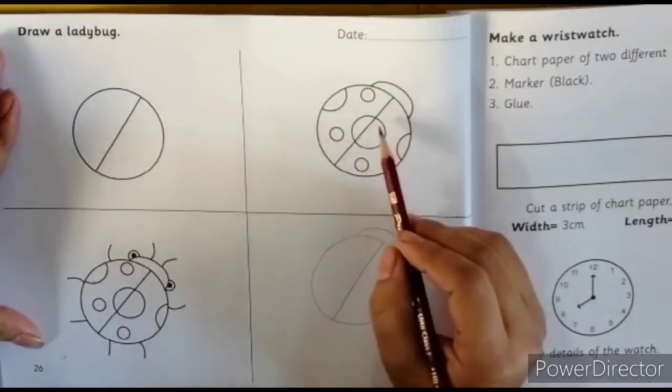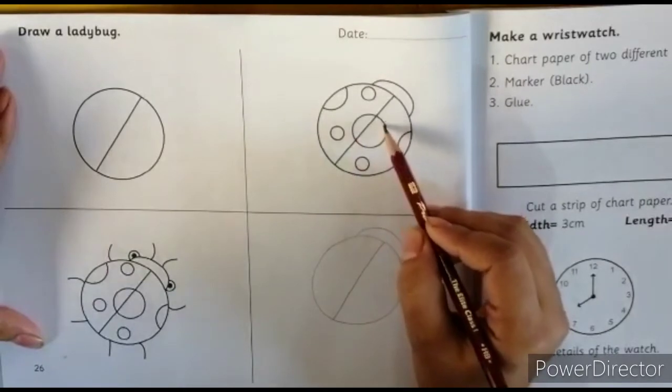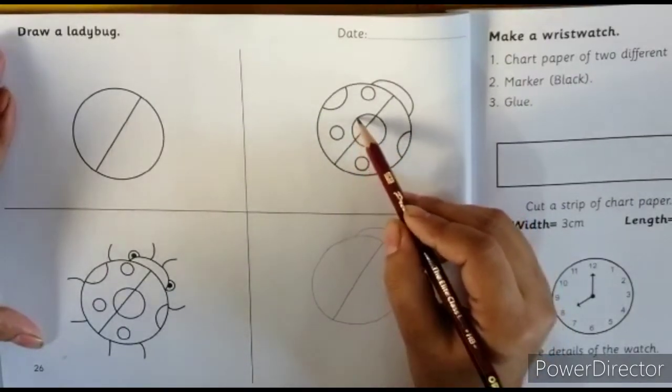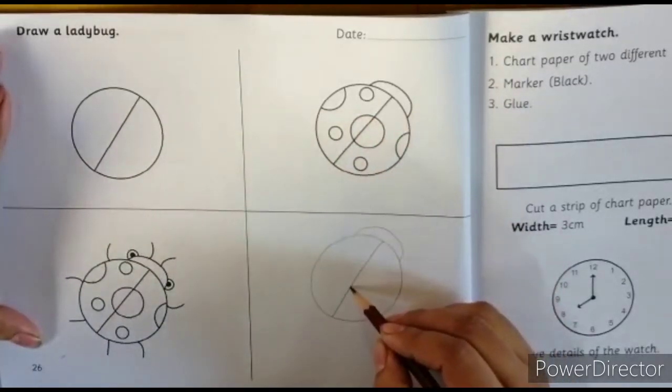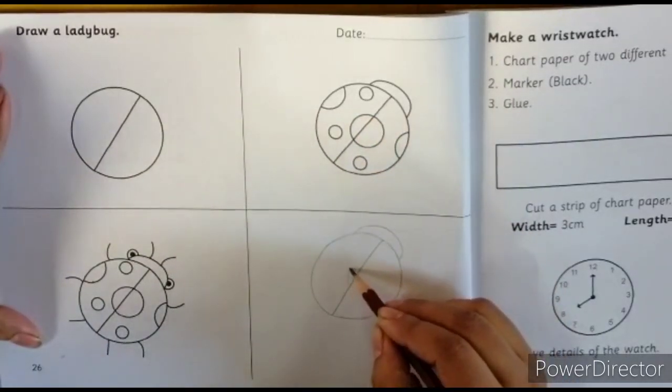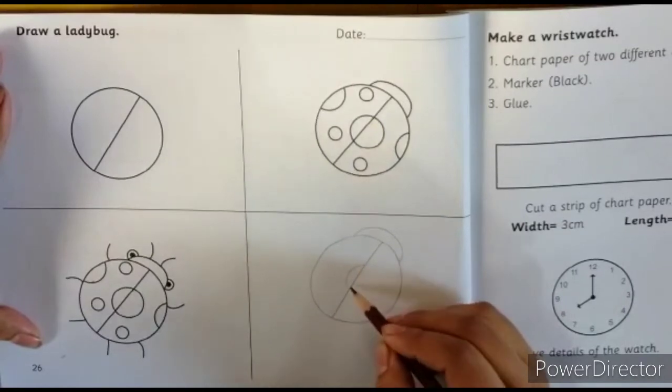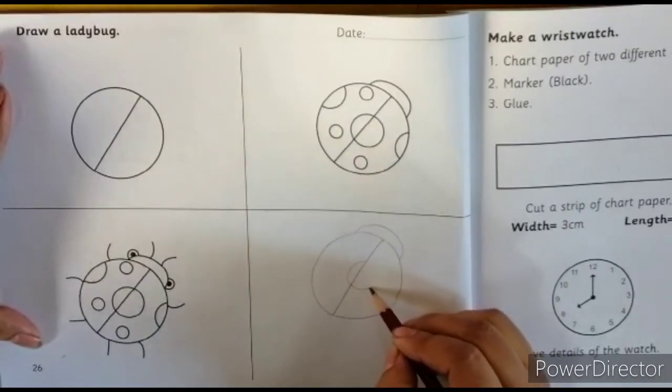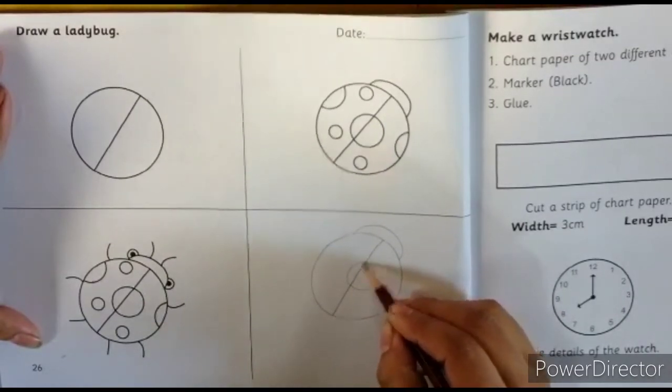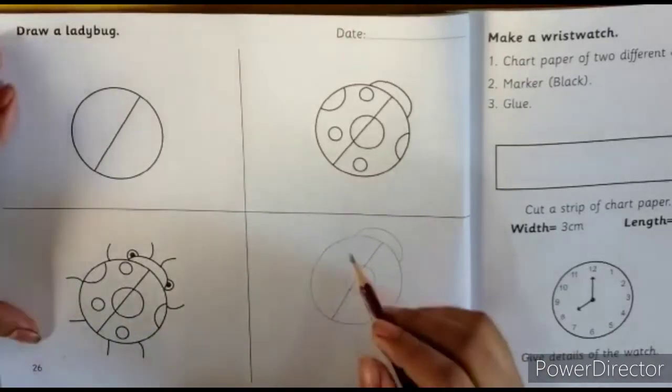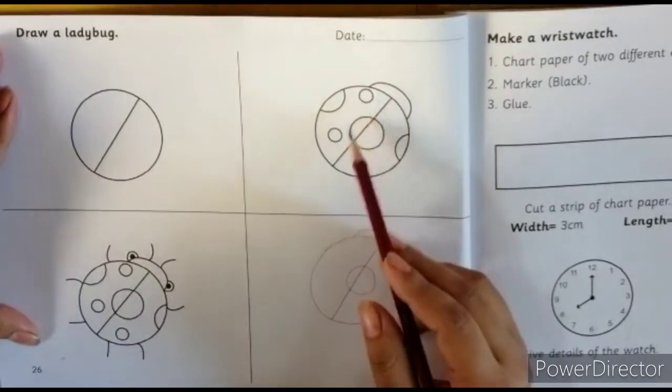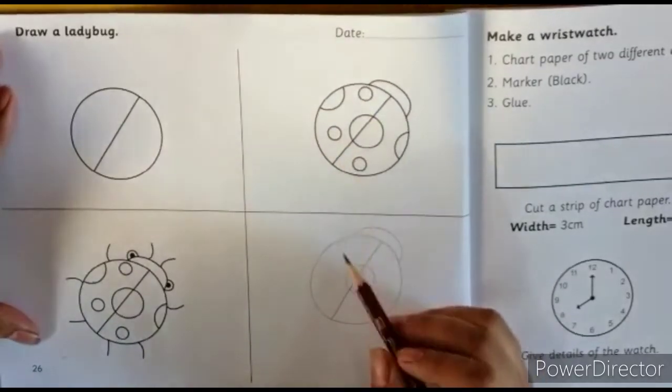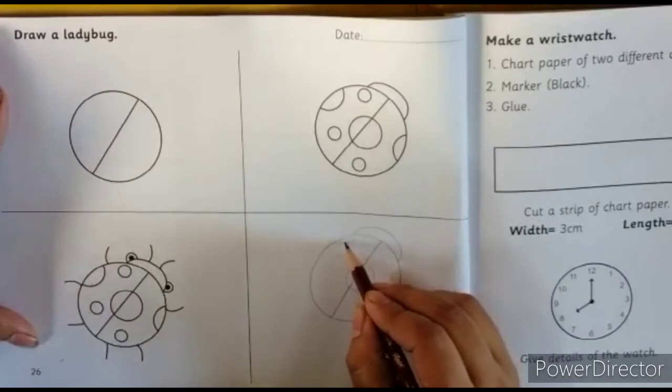The line should be straight. We will see that the bottom side is a little bigger and the upper side is a little big. Then we will also make a circle in this way. In the center, the top is a little big. Then we will make a circle in the top.